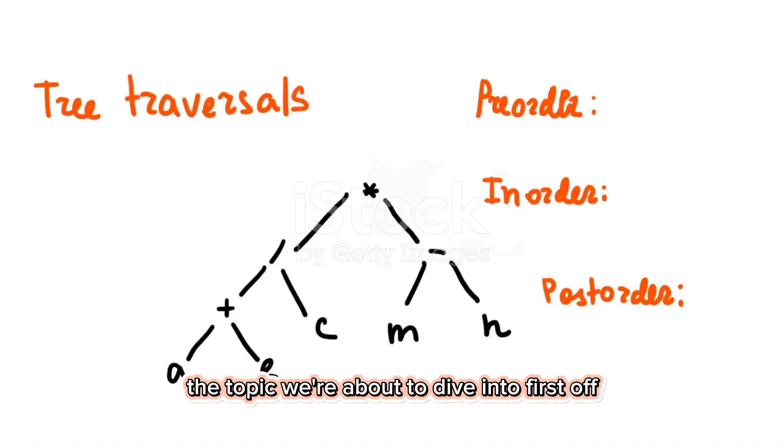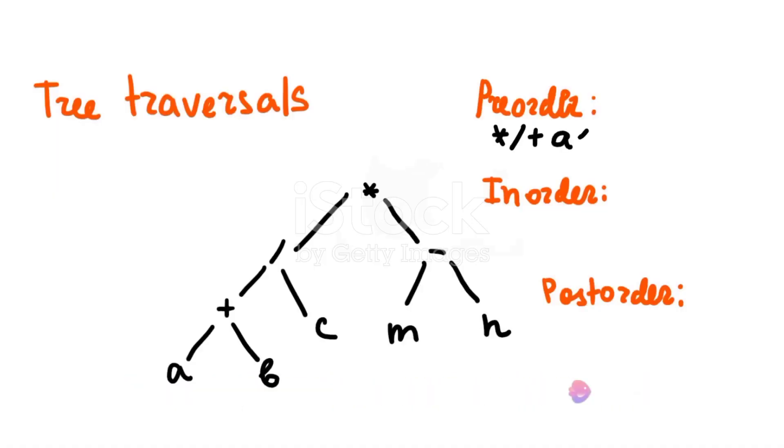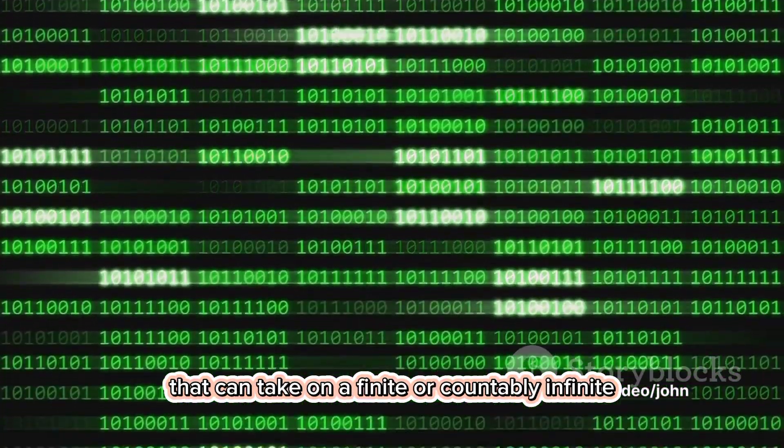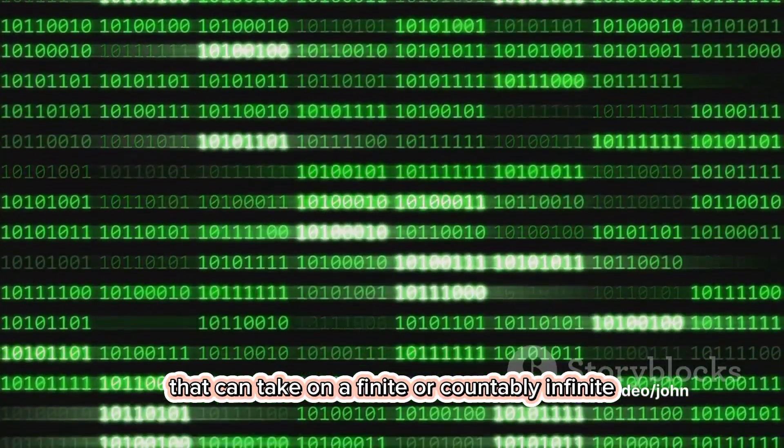First off, let's comprehend what a discrete random variable is. A discrete random variable is a type of random variable that can take on a finite or countably infinite number of values.